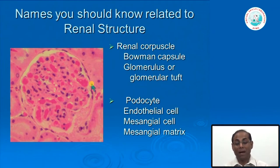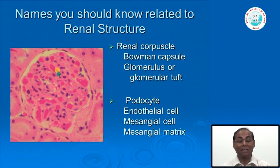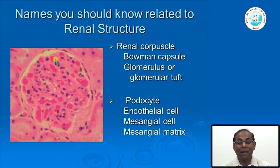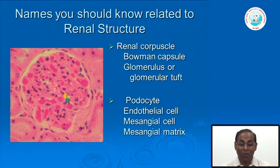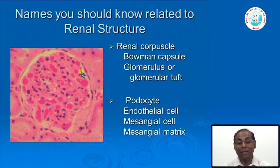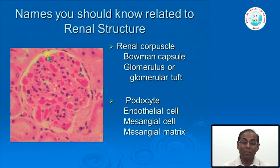Under light microscopy, you can identify the capillary lumen with red blood corpuscles inside, and between capillary lumens is the mesangium where normally one to three cells are seen—indicating a normal glomerulus. Podocytes can be seen outside the capillary loops. The Bowman's space is visible, and the flattened cells lining it are parietal epithelial cells. This is the structural component as seen under light microscopy in a glomerulus.